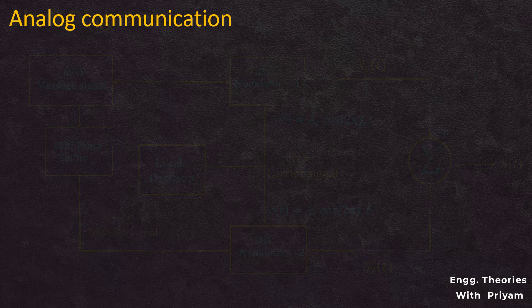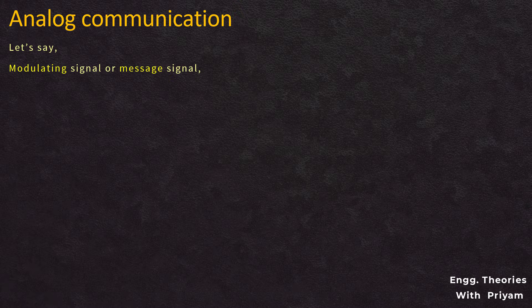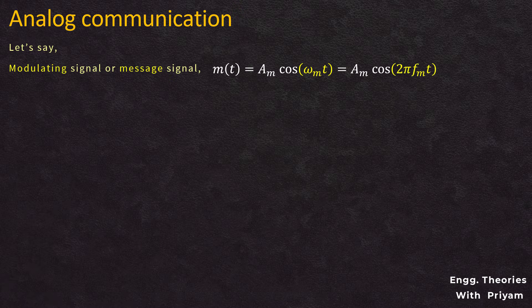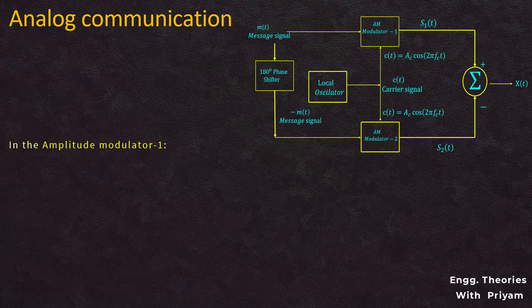Let's see the mathematical analysis for the balanced modulator using AM modulators. The modulating signal m(t) is equal to Am·cos(ωm·t), which equals Am·cos(2π·fm·t), and the carrier signal c(t) is equal to Ac·cos(ωc·t), which equals Ac·cos(2π·fc·t).